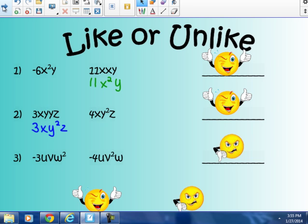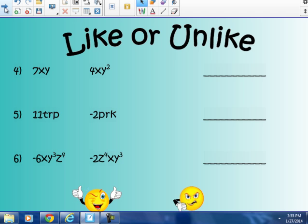Number 4, 7xy and 4xy². x in the first term, x in the second term. y in the first term, y². Are they the same power? No, they are not. To be like, they have to have the same variables to the same power. So number 4, if you said not like or unlike, you were correct. They are unlike.